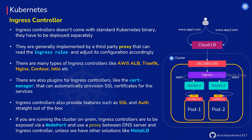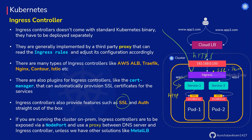We can also have SSL termination at the ingress. That means you can have HTTPS traffic up to the ingress controller, and once the traffic goes inside the cluster it can be plain HTTP. So you can have HTTPS externally and HTTP internally — the SSL is terminated at the ingress.